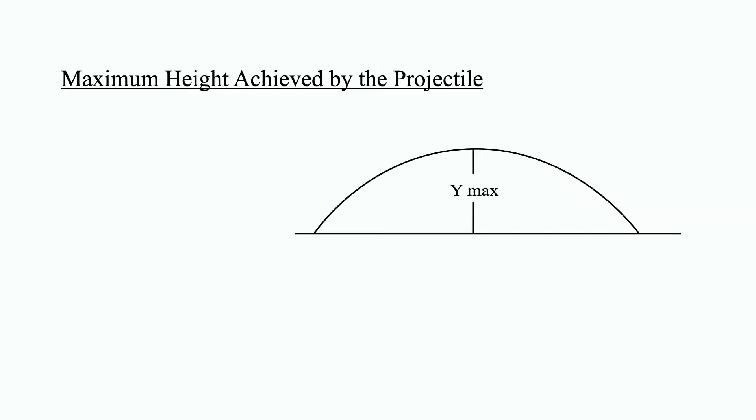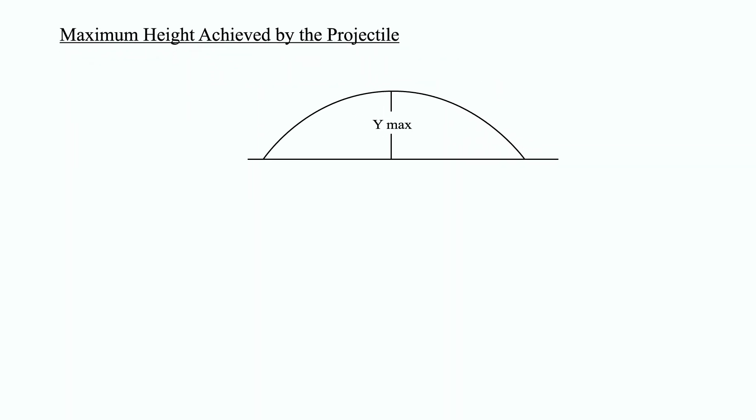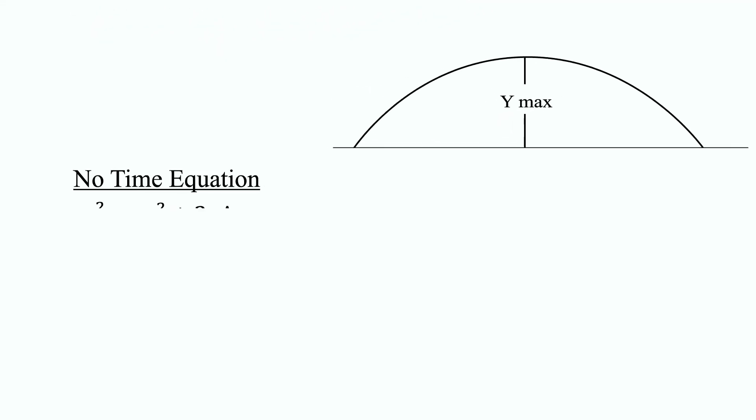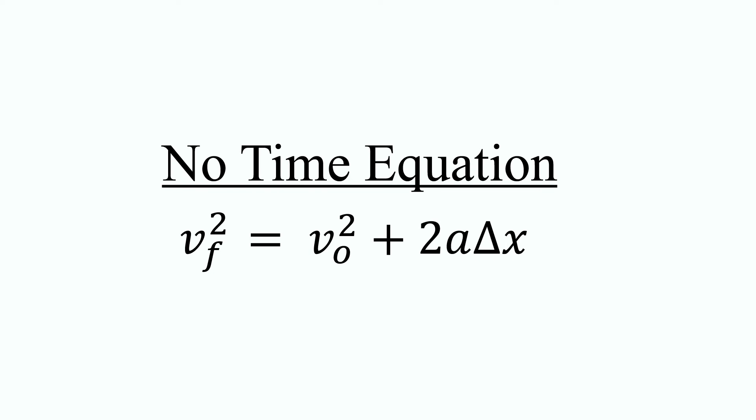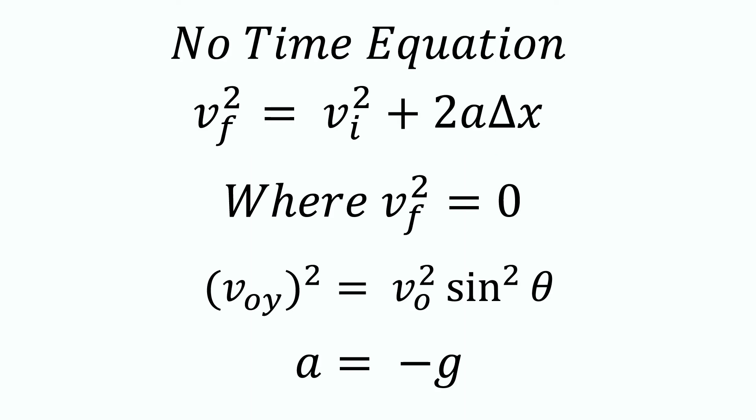One, maximum height achieved by the projectile. This value can be obtained by using the fact that at the peak of its trajectory, the object's vertical velocity is zero. There are several ways to solve for this value. I will use the no time equation, v final squared equals v initial squared plus 2a delta x.